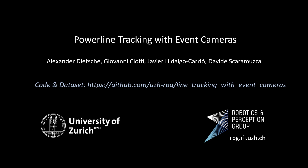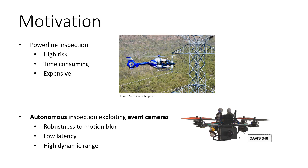We present our work: power line tracking with event cameras. Power line inspection is a high-risk, time-consuming, and expensive operation. Specialized human operators typically use ropes or scaffoldings to access the power line infrastructure, and helicopters for long-range inspection. Autonomous inspection using quadrotors is an effective and efficient solution that can drastically reduce inspection cost and time and increase quality.